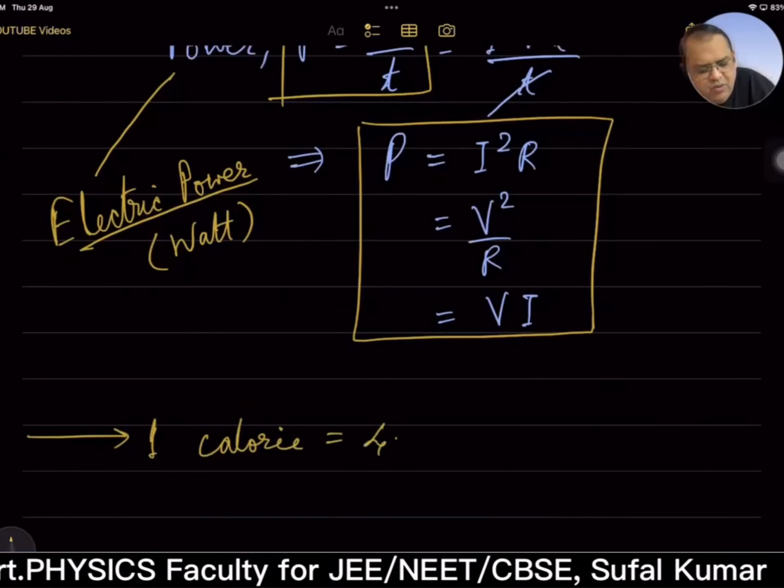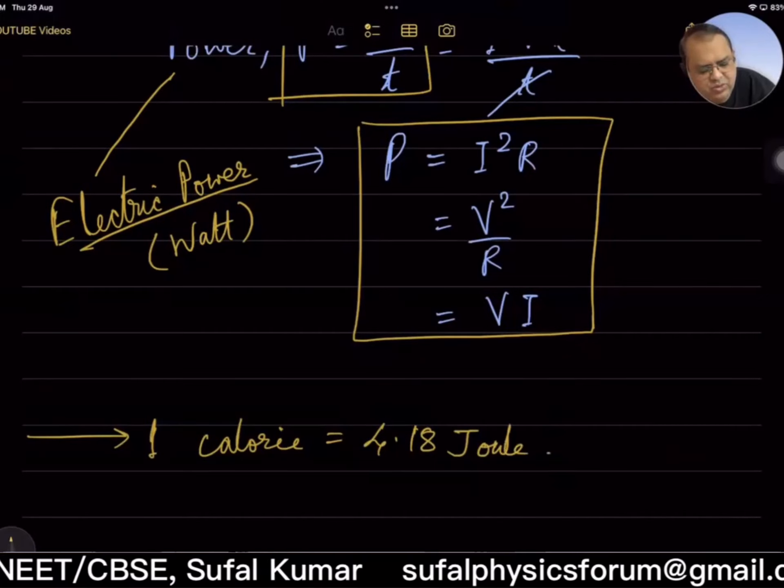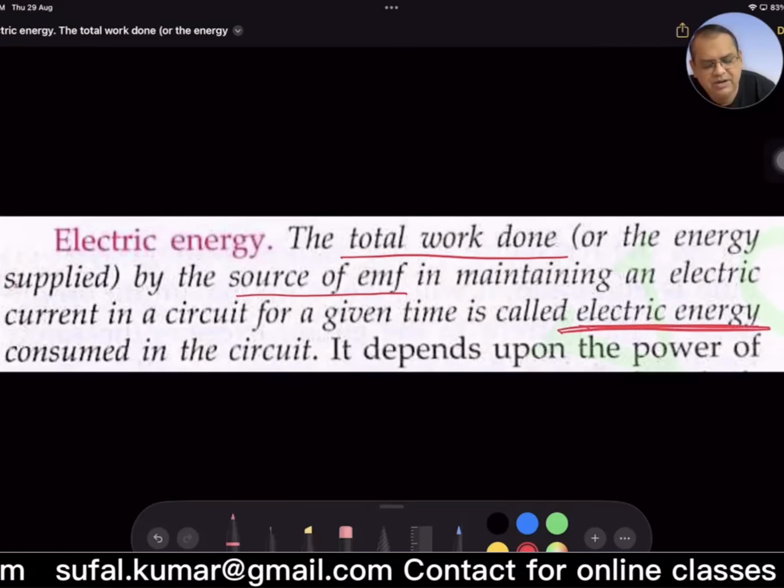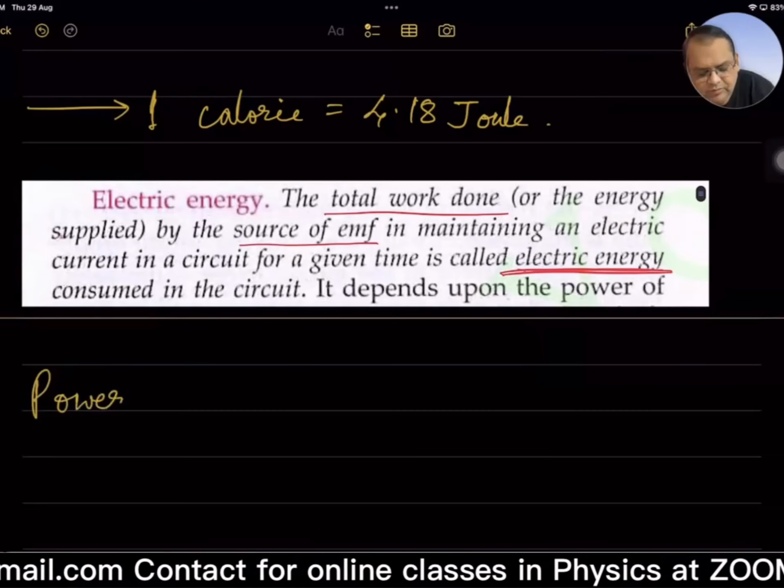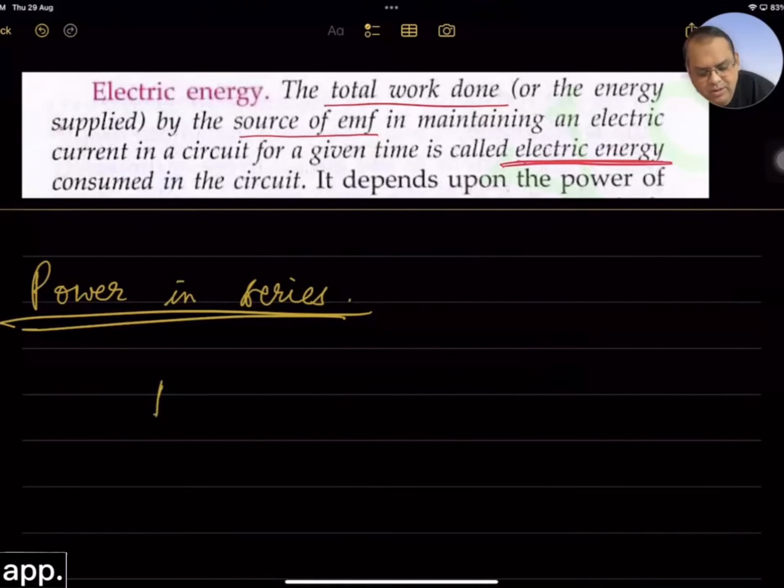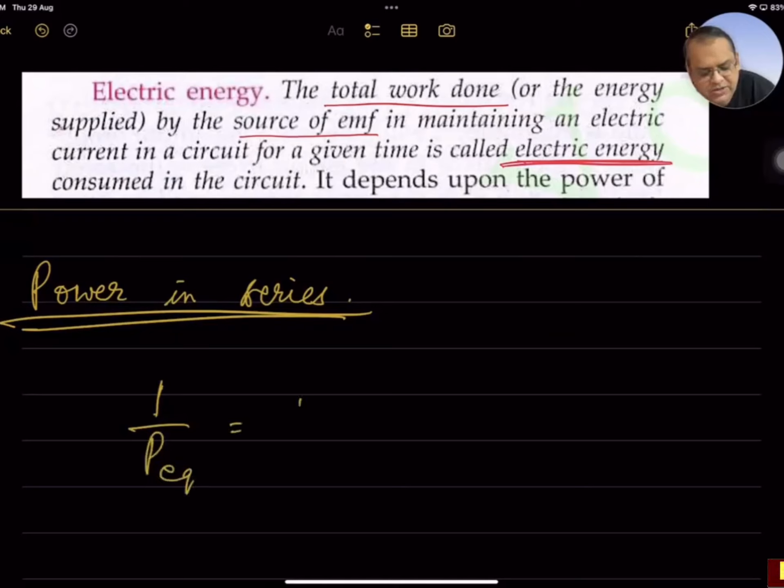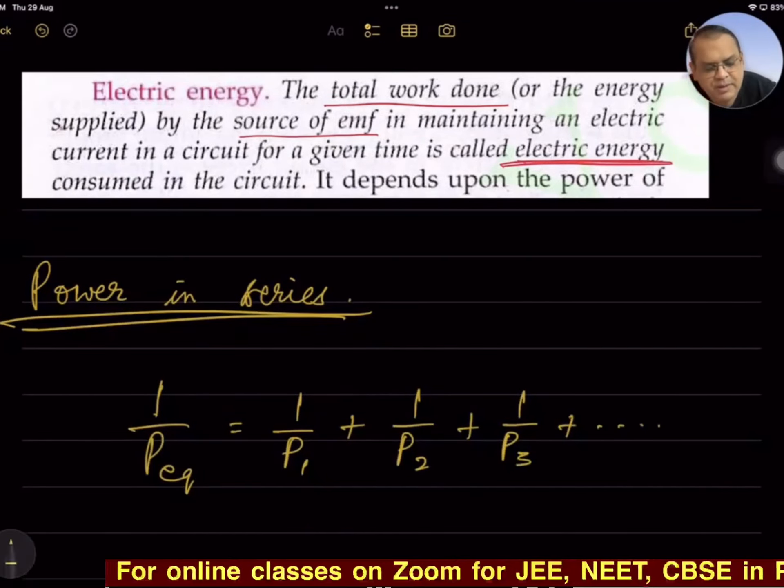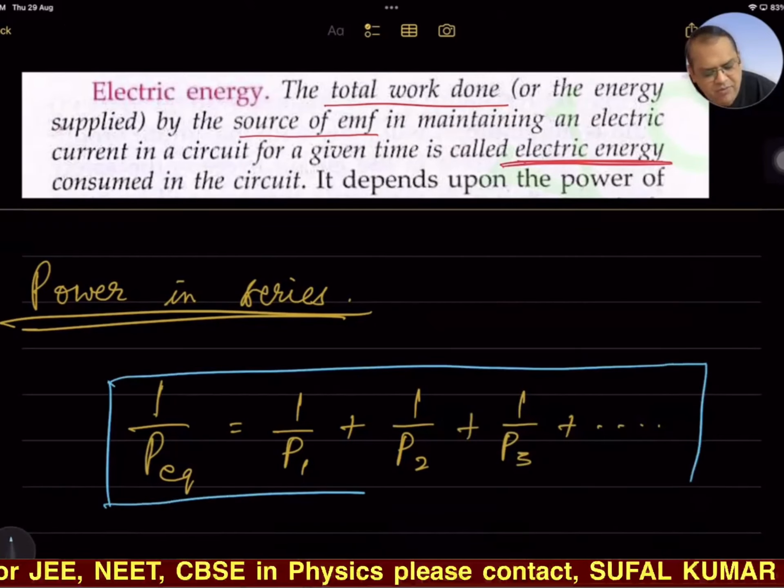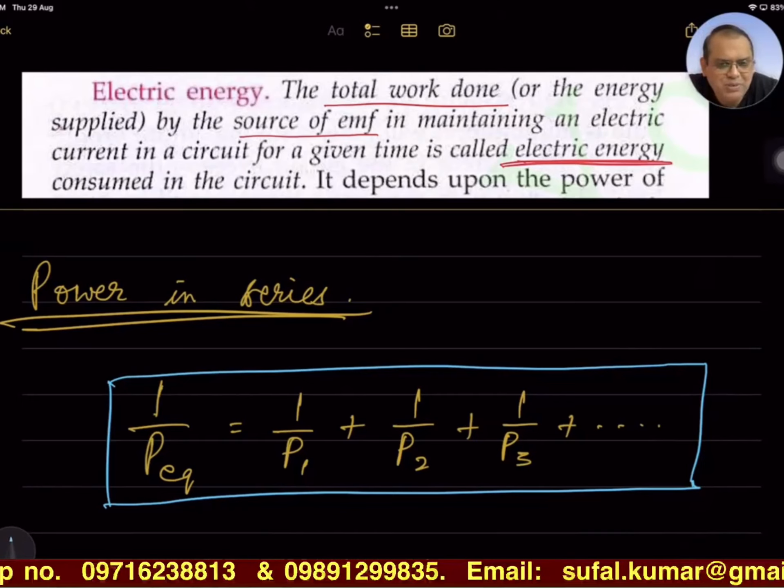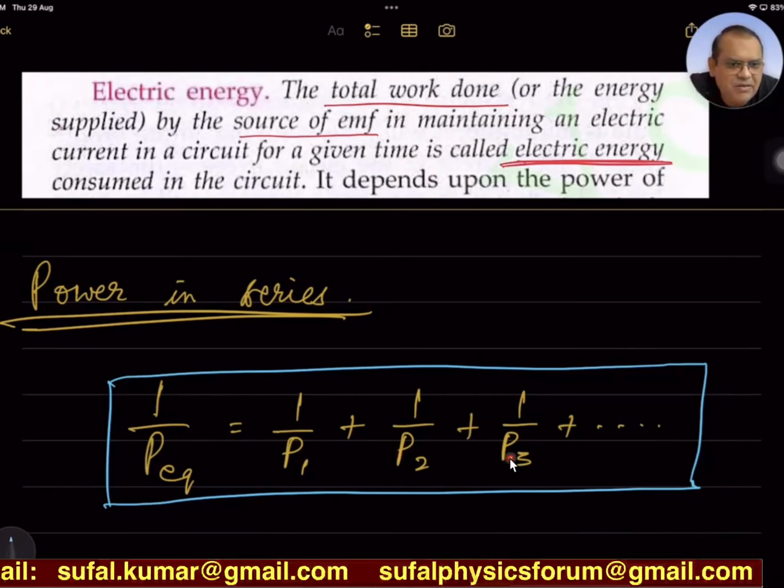Electric energy is the total work done or electrical energy consumed in the circuit. For power in series, 1/P_equivalent = 1/P₁ + 1/P₂ + 1/P₃ and so on. That means if n number of electrical devices are connected in series such that P₁, P₂, P₃ are individual powers, then total power consumed or equivalent power should be equal to reciprocal sum like equivalent resistance.